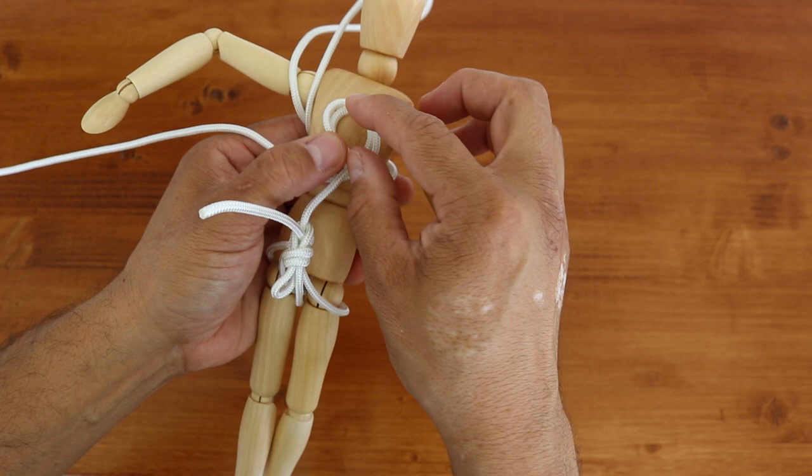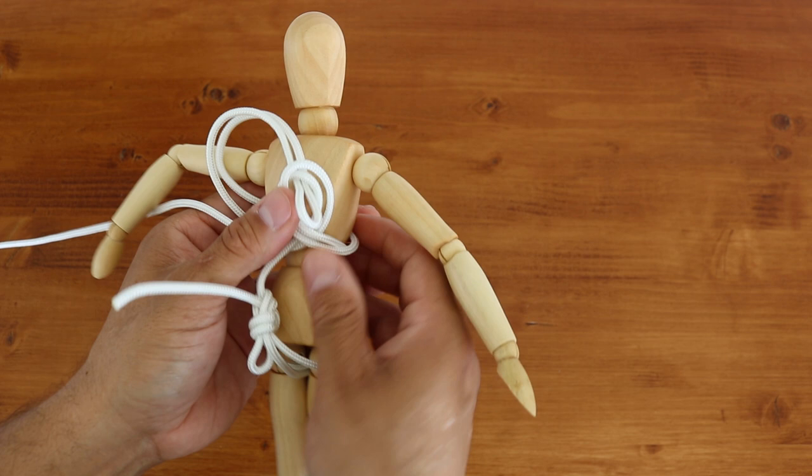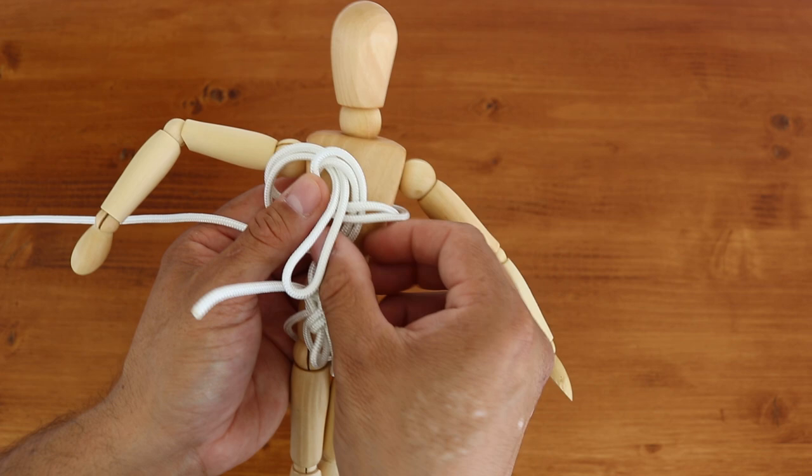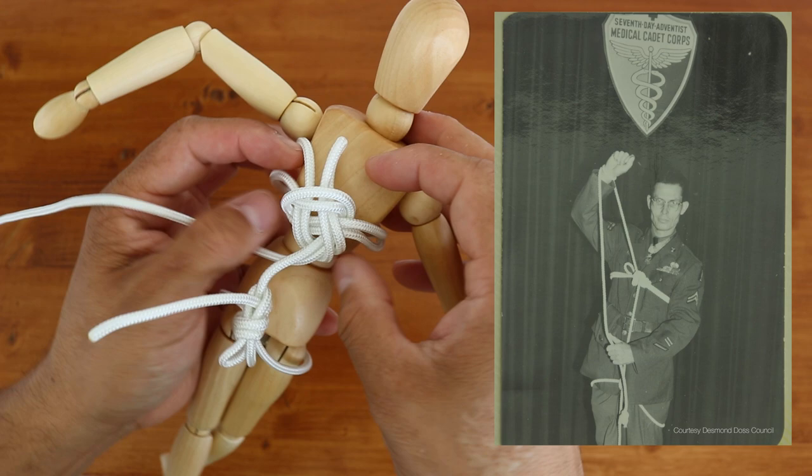From here, we'll take this loop, we'll pass it through, there we go. And now it's a matter of just going around that tree and then back through the hole. So I'll go downwards around the tree, and then around it goes right through the hole again. And if you notice, we ended up on the top side, just like the photo. Pull everything tight.